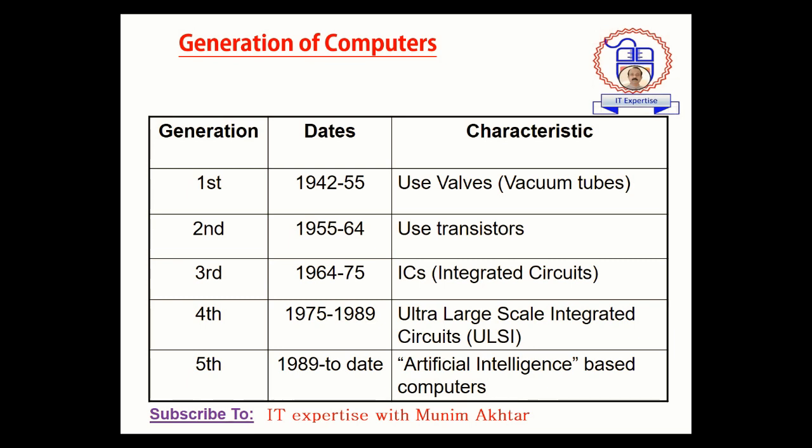Next is the fourth generation, from 1975 to 1989. This used ULSI — Ultra Large Scale Integration — the highest power of ICs. This means that where 100 ICs were used to perform a task, those 100 ICs were combined into a new ULSI IC, so your task was performed with less electricity, less heat generated, and less space occupied.